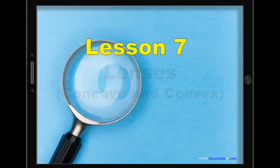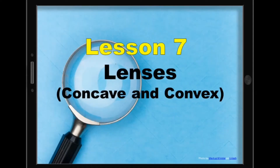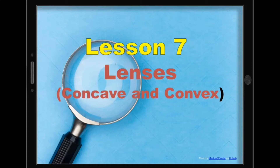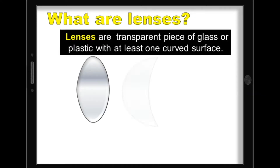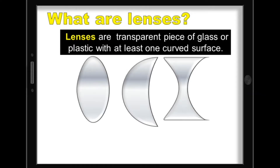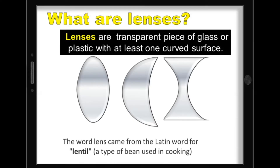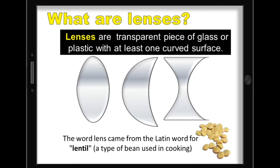Lesson 7: Lenses, Concave and Convex. What are lenses? Lenses are a transparent piece of glass or plastic with at least one curved surface. Did you know? The word lens came from the Latin word lentil, which is a type of bean used for cooking.